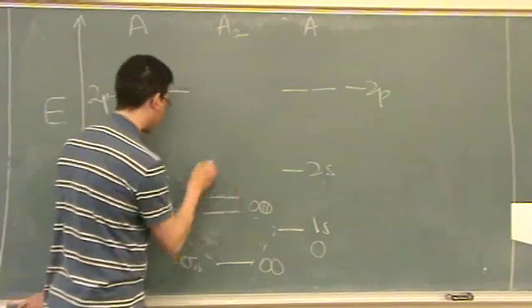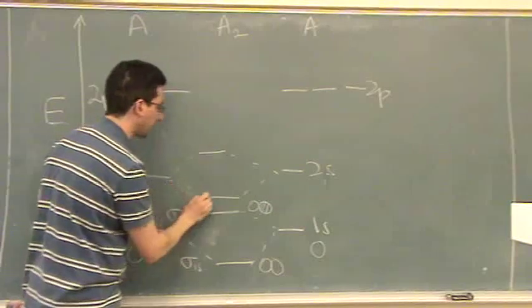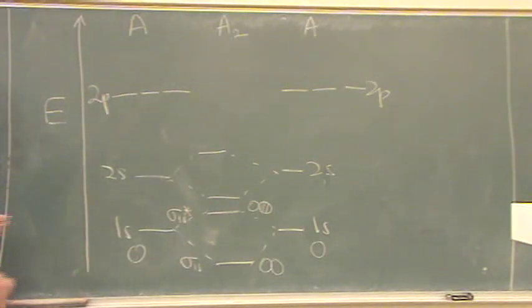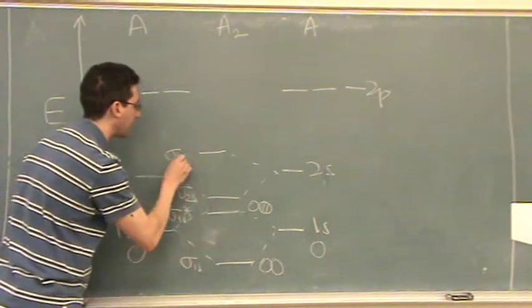So then, I'm going to do 2s. You're going to notice it's going to look exactly the same. I draw the bonding, the anti-bonding. I have a sigma now 2s and a sigma 2s star.